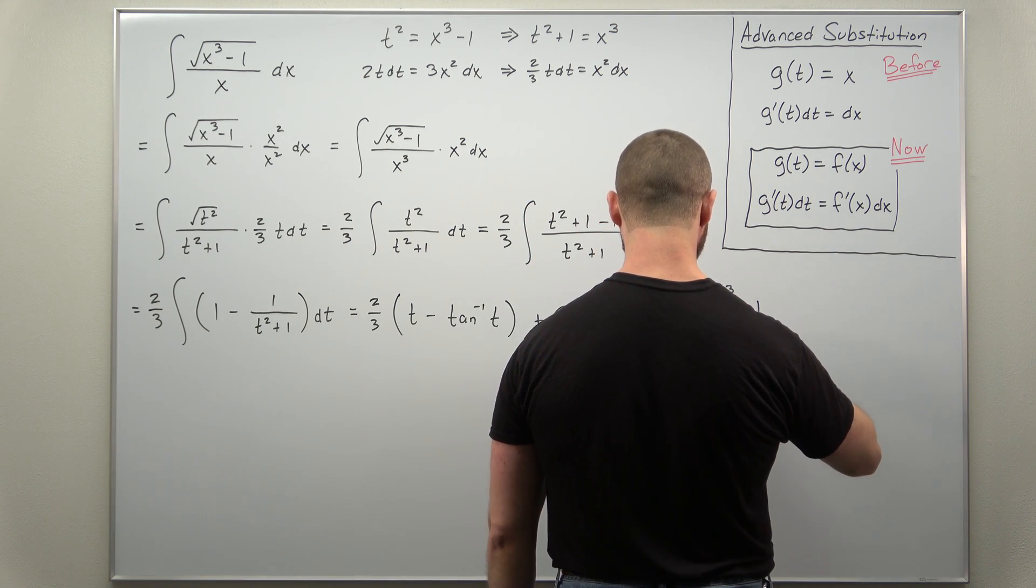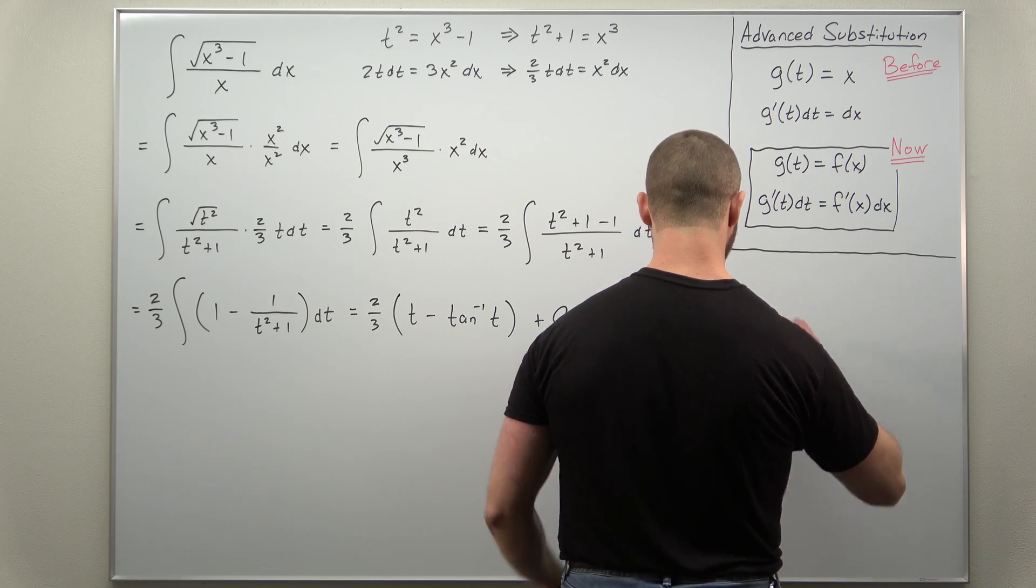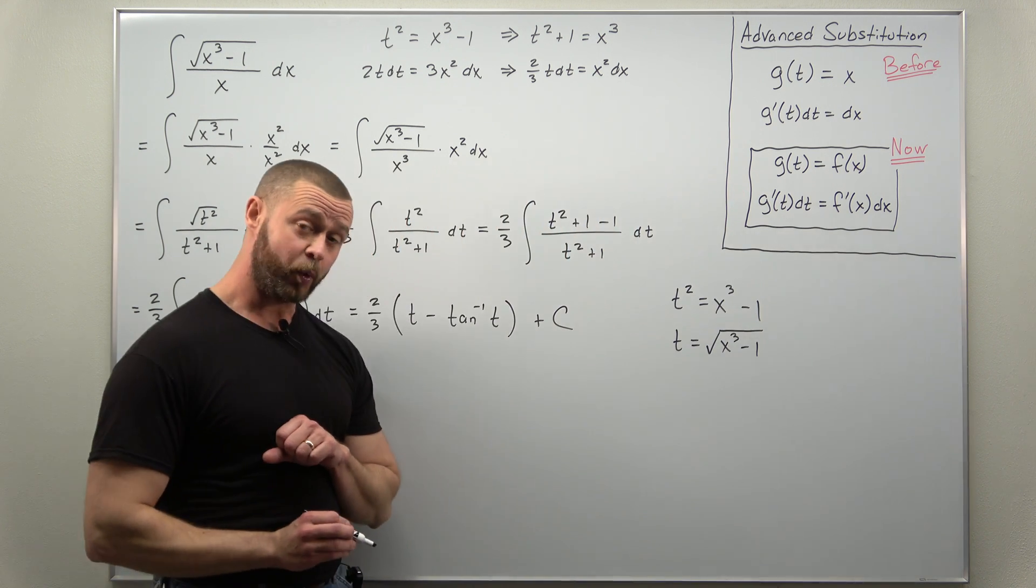So we'll think of t here as the square root of x cubed minus 1.